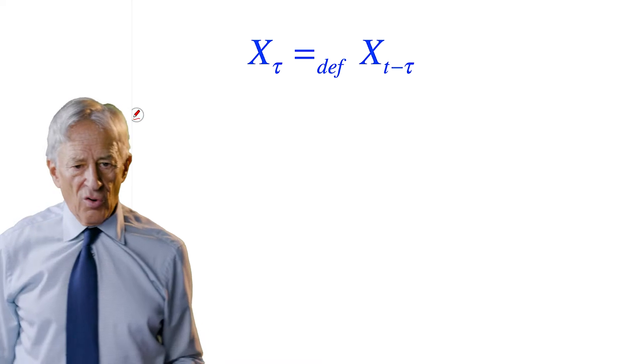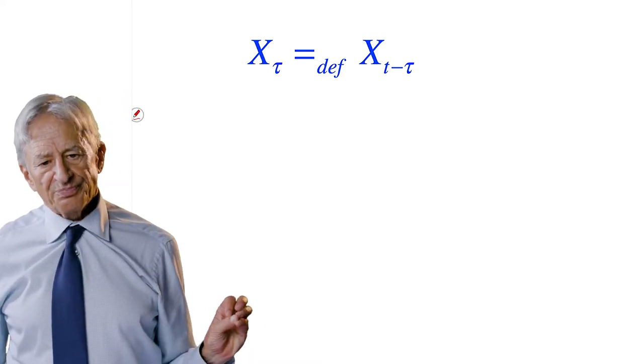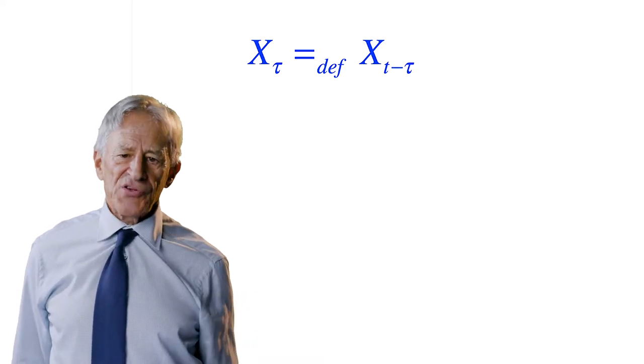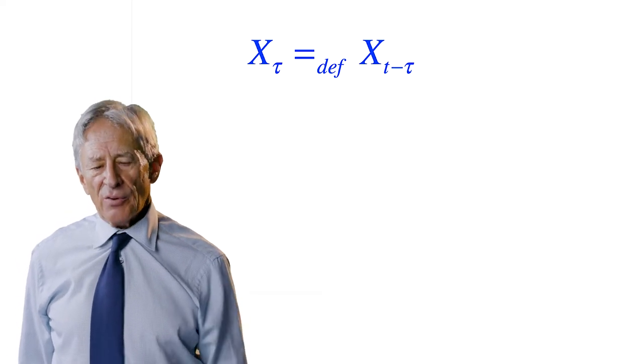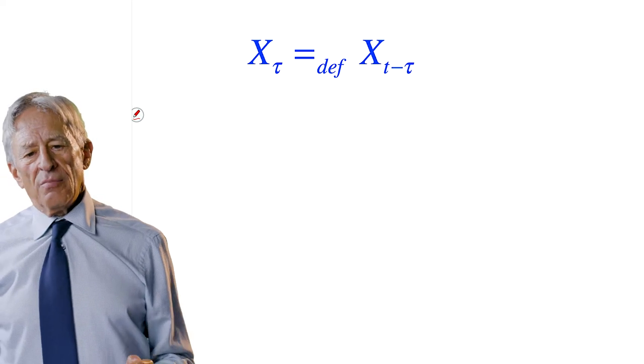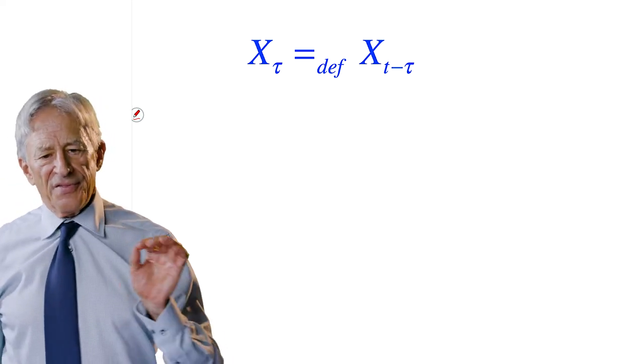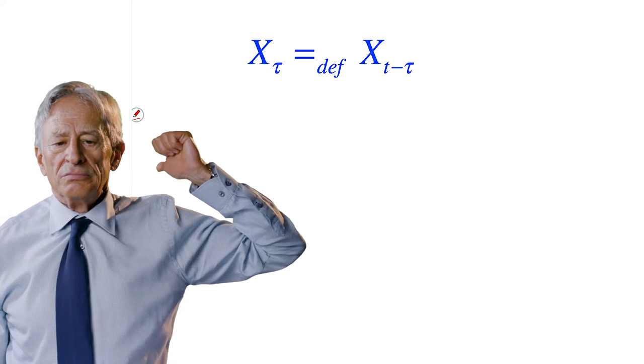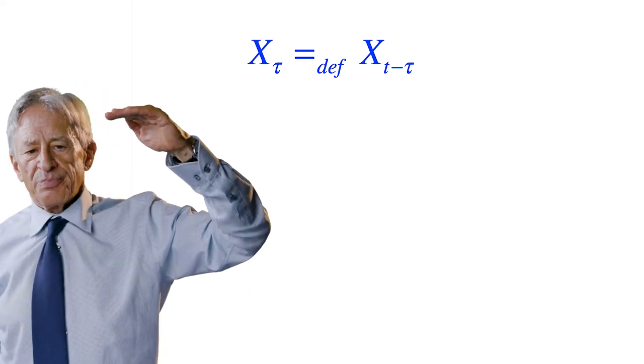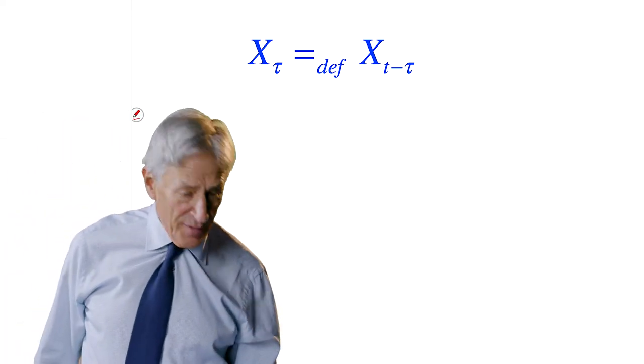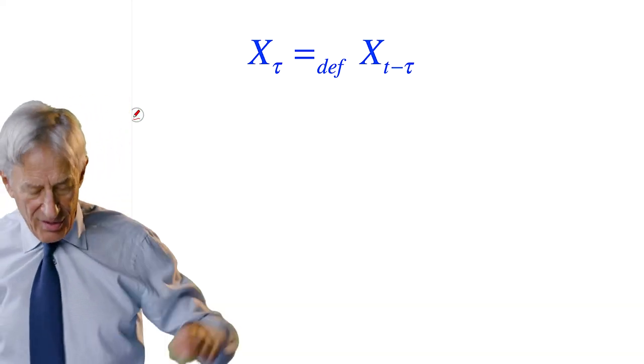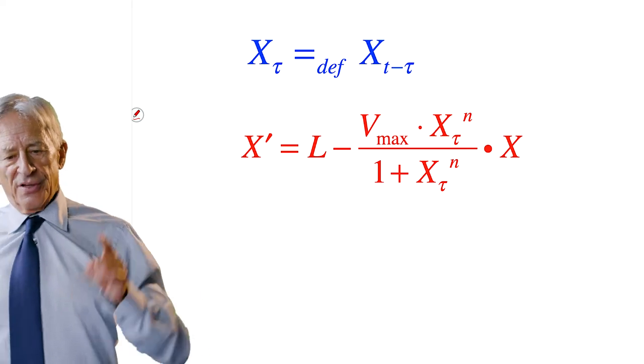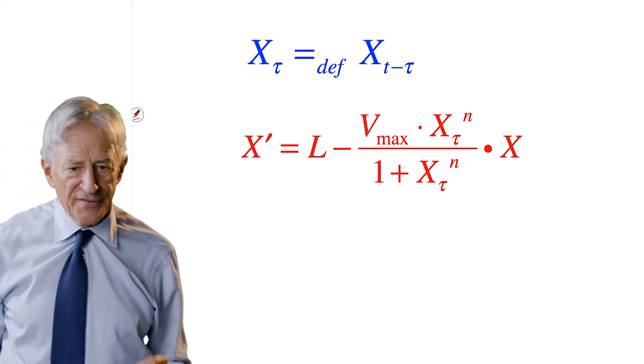So we have to introduce a new terminology. And the new terminology is called time delay. And I'm going to define the symbol X sub tau. That's Greek lowercase tau. X sub tau we're going to define as the value of X tau seconds ago, where tau is the time delay. So this is a very useful concept. And we need it in our equation.